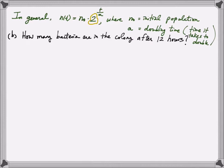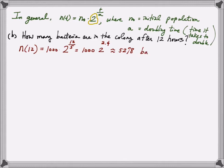Now that we have a model, let's ask: how many bacteria are there in the colony after 12 hours? This asks us to find N of 12. Using the model, we have 1,000 times 2 raised to 12 over 5, which is 1,000 times 2 raised to 2.4. Since 2 to the 2.4 cannot be done by hand, we use a calculator to approximate, which gives about 5,278 bacteria after 12 hours.